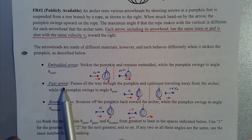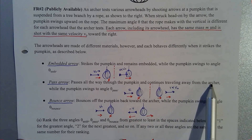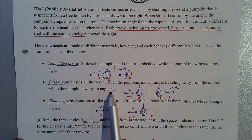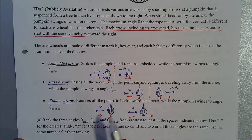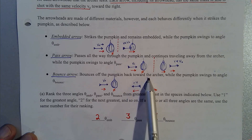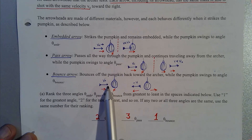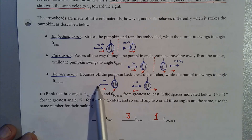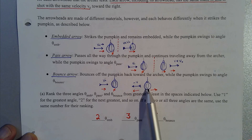The second scenario is called the pass arrow — it passes all the way through the pumpkin and continues traveling away from the archer while the pumpkin swings to theta-sub-pass. It loses less velocity than the embedded case but gives the pumpkin some velocity to swing up. The third scenario is the bounce arrow — it bounces off the pumpkin back towards the archer while the pumpkin swings to theta-sub-bounce. The arrow hits the pumpkin, bounces back the other way, and the pumpkin swings up to a final angle.